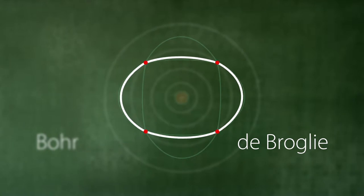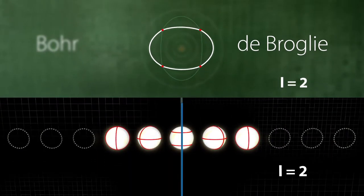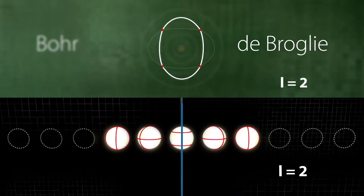In this example, we have L equals 2. Accordingly, there are electron positions with two nodal lines in the quantum dimension.